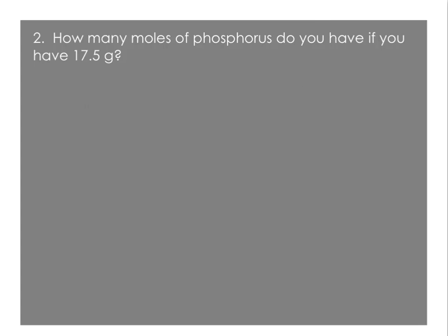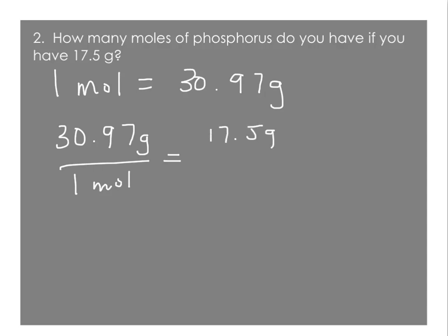Next, how many moles of phosphorus do you have if you have 17.5 grams? Well, on the periodic table, phosphorus has a molar mass of 30.97, so 1 mole equals 30.97 grams. We don't have 30.97 grams, we only have 17.5 grams. So we have less than 1 mole. And there's a number of different ways that you could solve this, but let's go with a proportion. 30.97 grams is to 1 mole, as 17.5 grams is to x moles. I'm going to round my answer to 3 sig figs, since 17.5 is 3 significant figures, and I get 0.565 moles. So you can see we got an answer that was less than 1 mole.